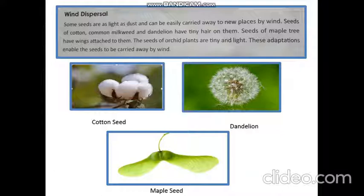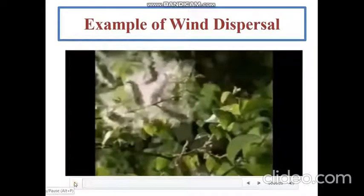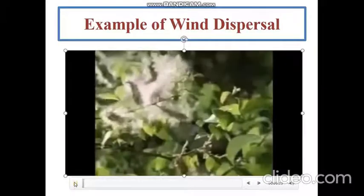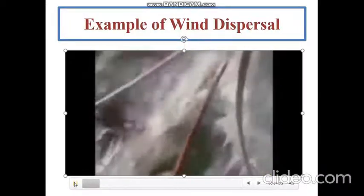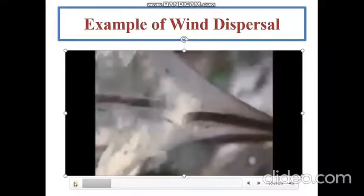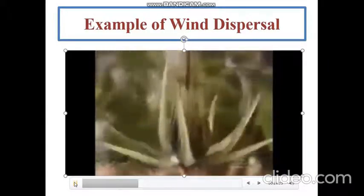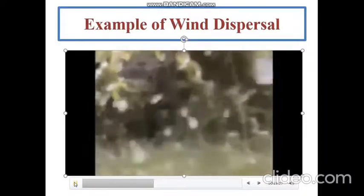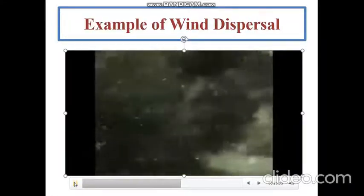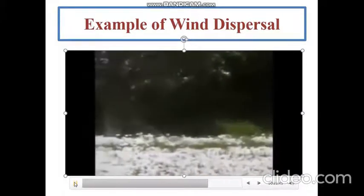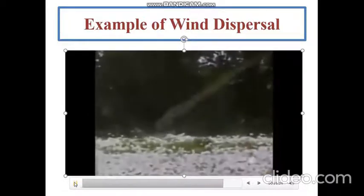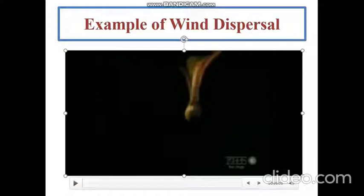Through a video, let's see how dispersal happens through wind. You can see the cotton seeds — it is so easy for the wind to blow them away. And here are the dandelion seeds, simply dispersing away. Here we also see a seed that has wings. As the wind blows, the seeds blow away and cover large distances. Here you can see a maple seed — it has wings and can float in air.